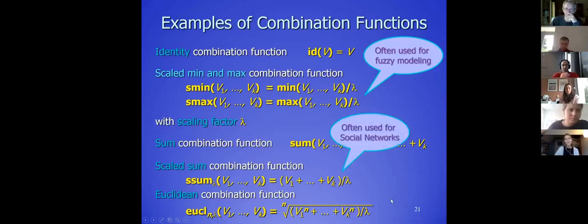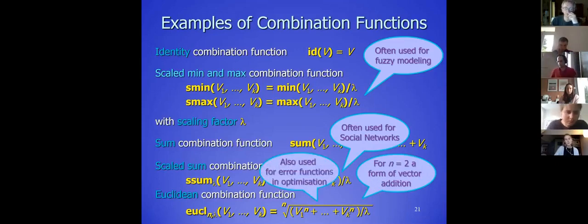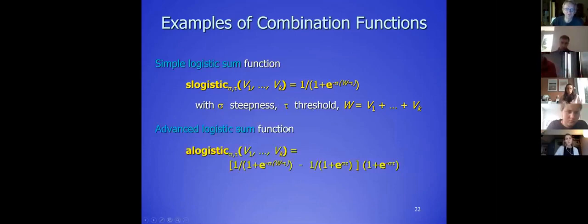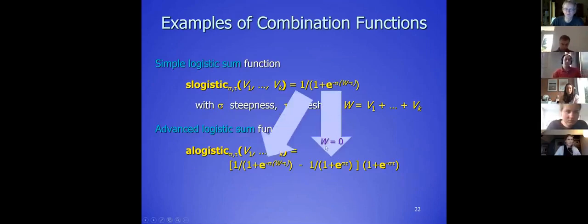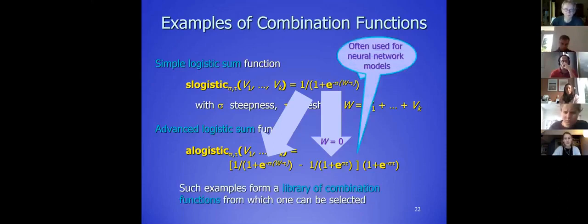The Euclidean functions are often used in social networks. If n is 2, you can see it as a kind of vector addition. They are also used in error functions and optimizations. The logistic functions are often used, also in neural networks. There is a simple form and an advanced form that has fewer disadvantages. We have a library of combination functions available in the software components. To successfully run any template in the software environment, you always have to put this library in your MATLAB accessible directory, otherwise MATLAB cannot find the right functions.